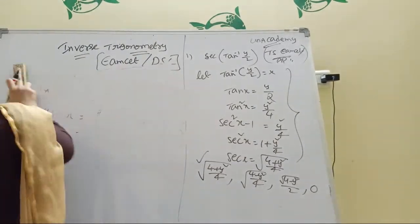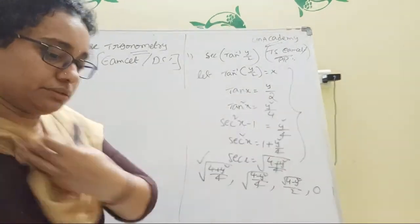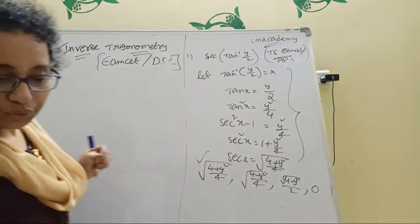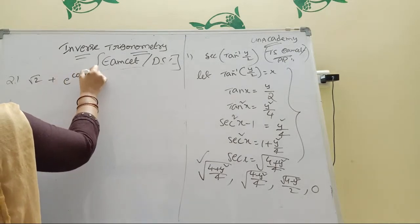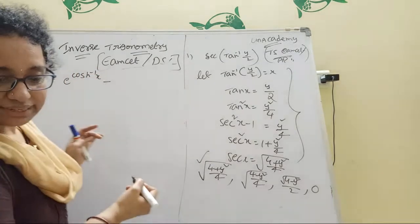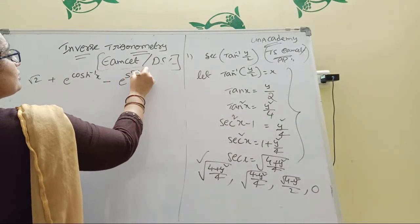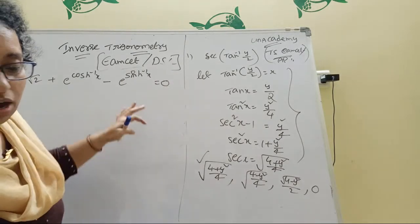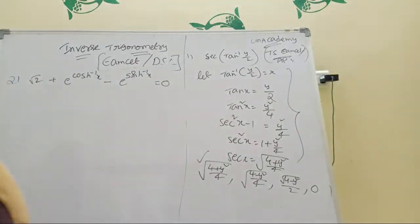Second question: √2 + e^(cosh⁻¹(x)) − e^(sinh⁻¹(x)) = 0. Solve for x. Now, I already explained the formulas for sinh⁻¹(x) and cosh⁻¹(x). Can anyone tell me how to solve this?